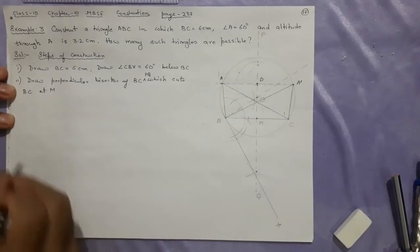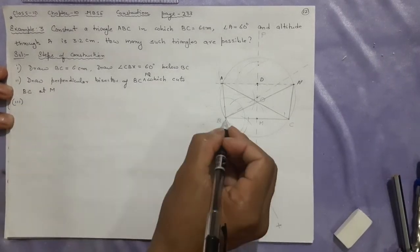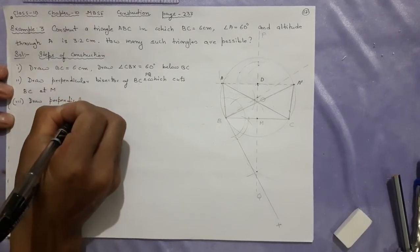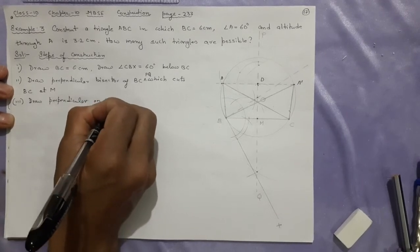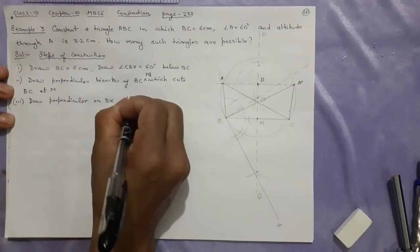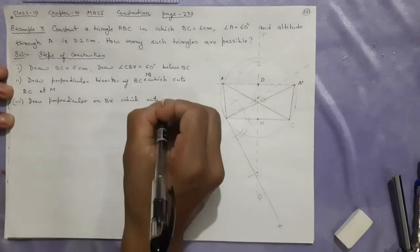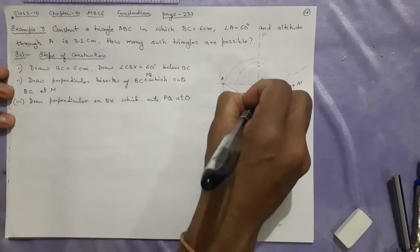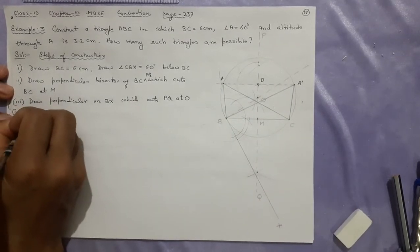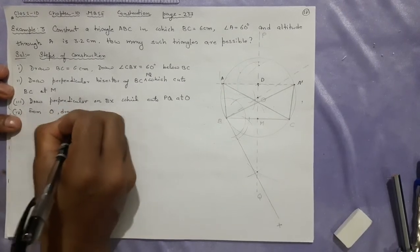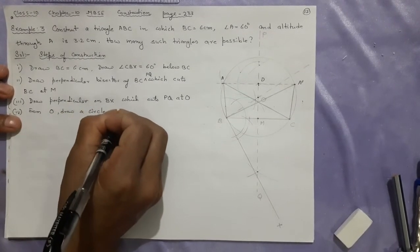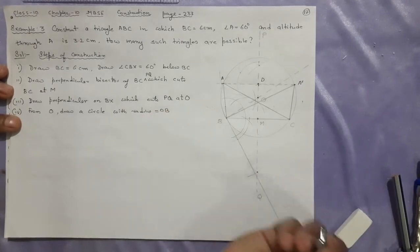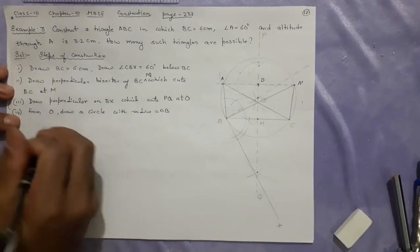After that, we made a perpendicular here. Draw perpendicular on BX, which cuts PQ at O. Remember, I made 90 degrees here which was going here and cutting that at O. Number four: From O, draw a circle. What was the radius I have taken? Radius was either OB or OC. Radius equal to OB, you write, it will be right.